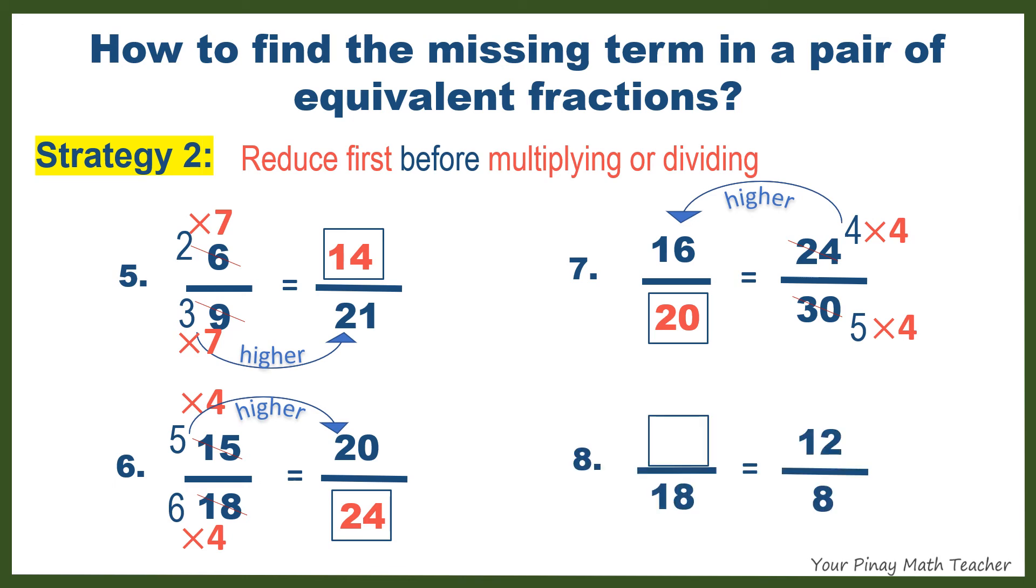Number 8. 12 and 8 can be reduced to lowest term by 4. 12 divided by 4 is 3. 8 divided by 4 is 2. 2 gets higher to 18. Therefore, we have to multiply 2 by 9. Do the same with 3, so we get our missing term, 27.